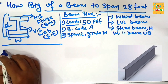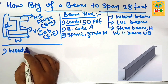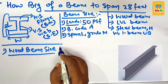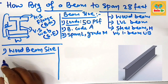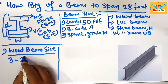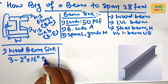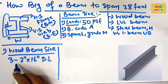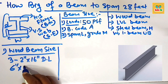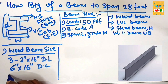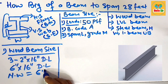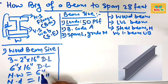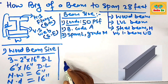For general purposes, the wood beam size for a 28-foot span: you should take three pieces of 2-inch by 16-inch dimensional lumber as the wood beam to span 28 feet. This can also be written as 6-inch by 16-inch dimensional lumber, in which the nominal width of the beam is 6 inches and the nominal depth of the beam is about 16 inches. This is the wood beam size required to span 28 feet.